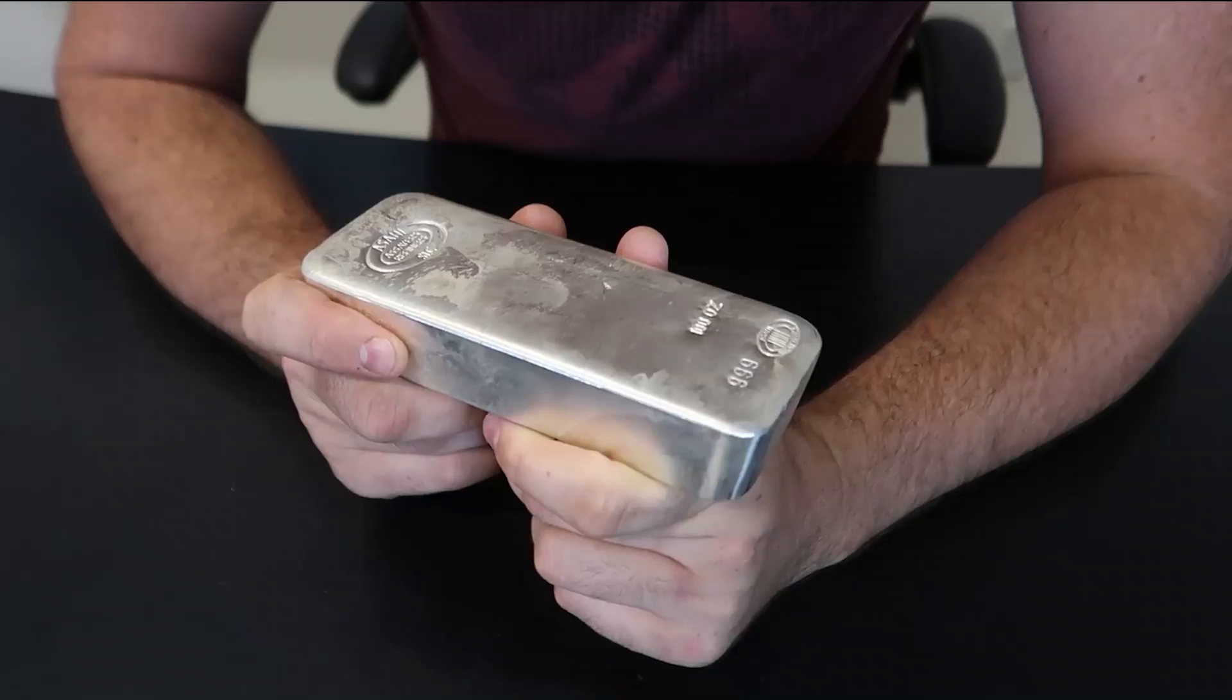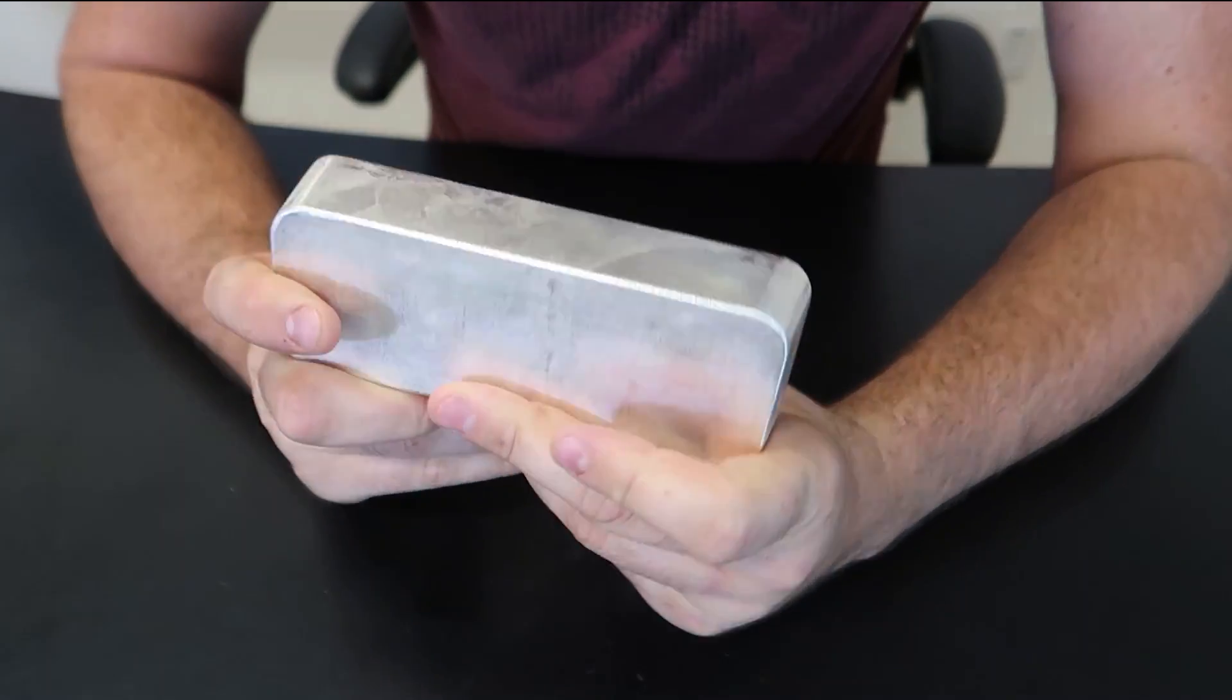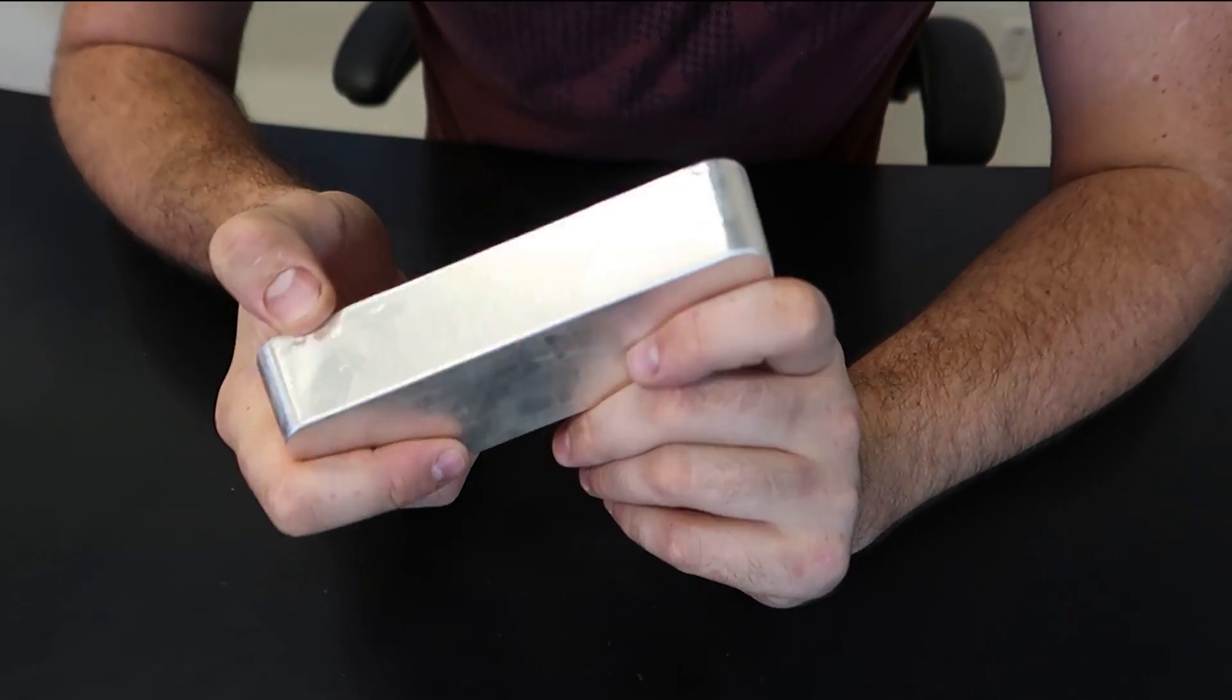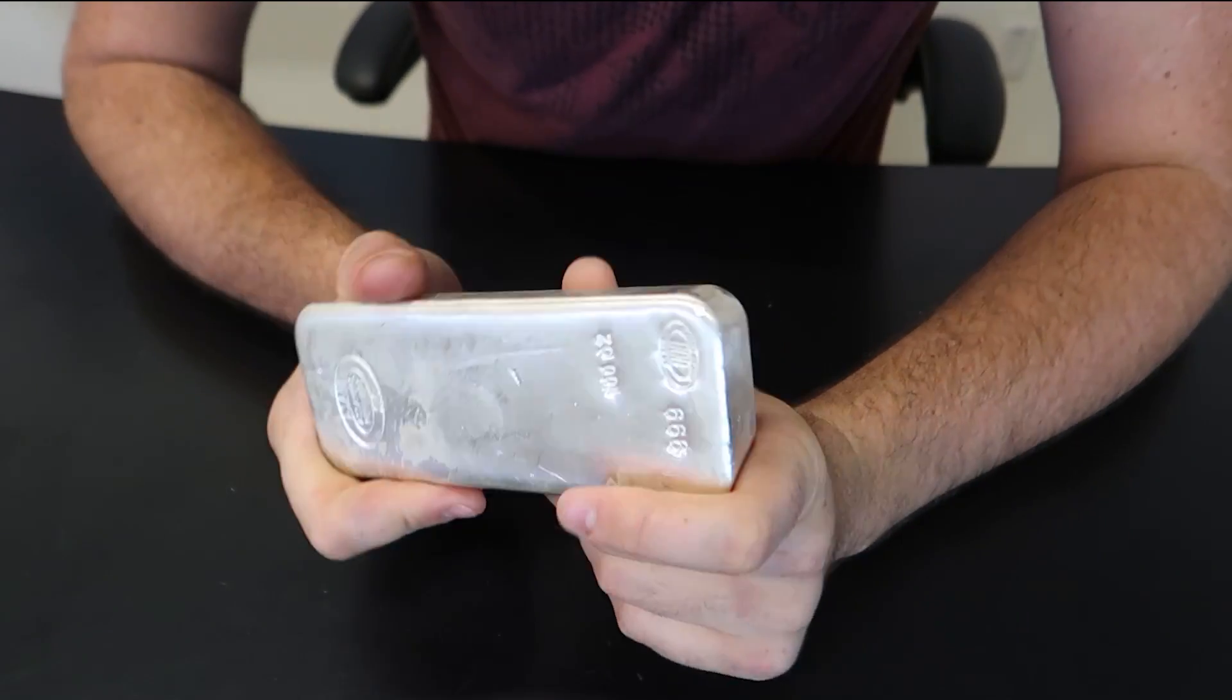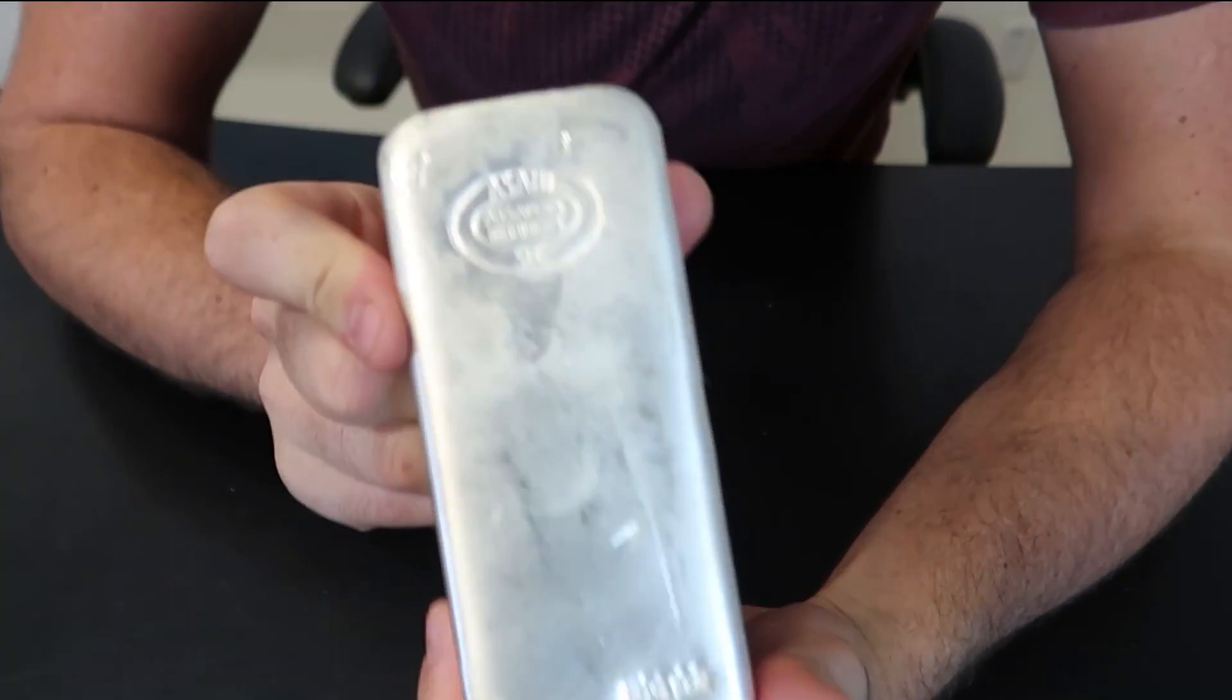They've been used, somebody's been stacking them on top of each other, scratched up, not super beautiful. This is why they sell them as random bars or secondary market, because they're not going to be new and shiny. You see there's some scratches to the side from stacking.